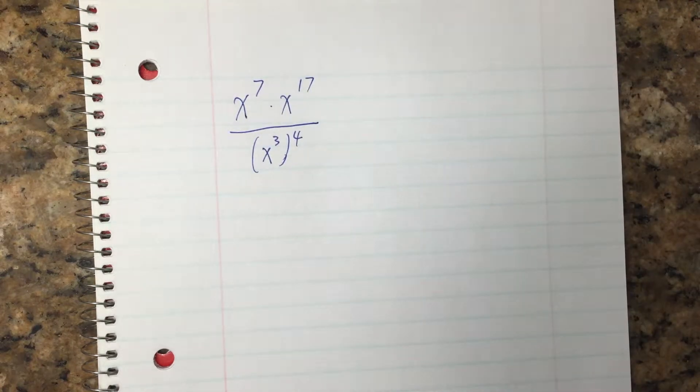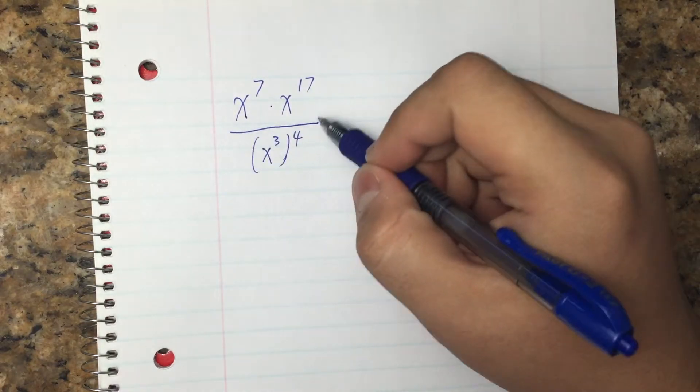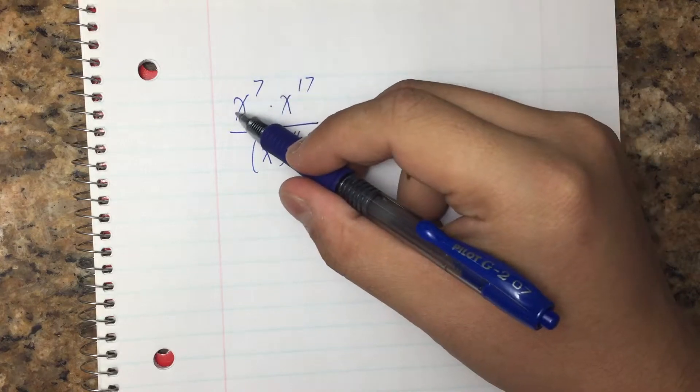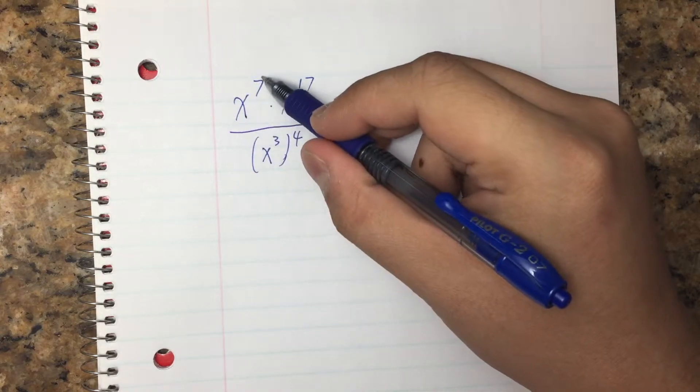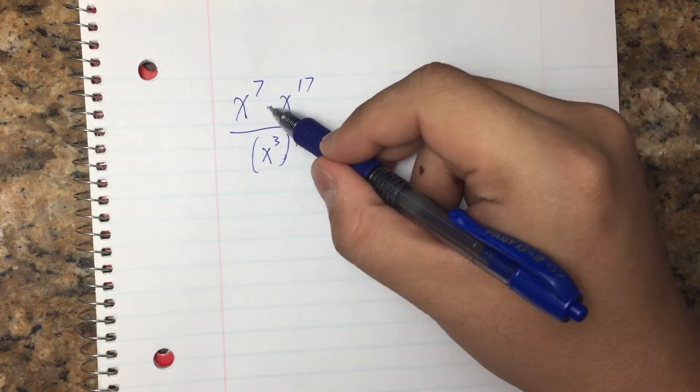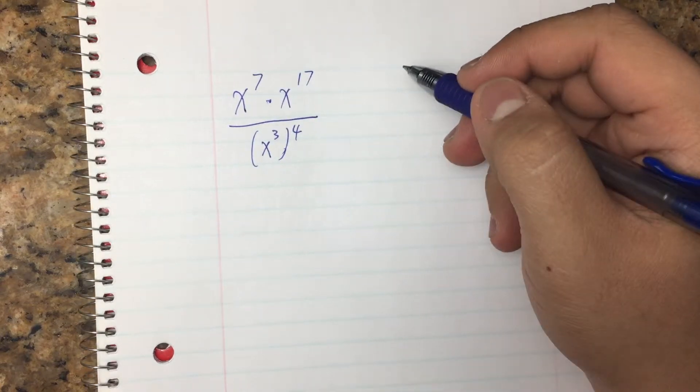So to do this one, we do numerator and denominator separately first. Well, we have x to the 7th power multiplied by x to the 17th power.